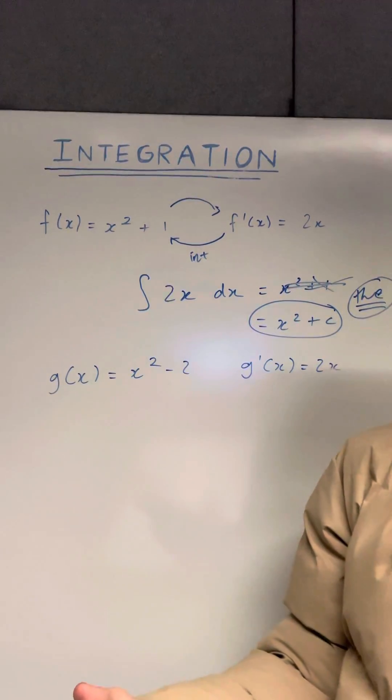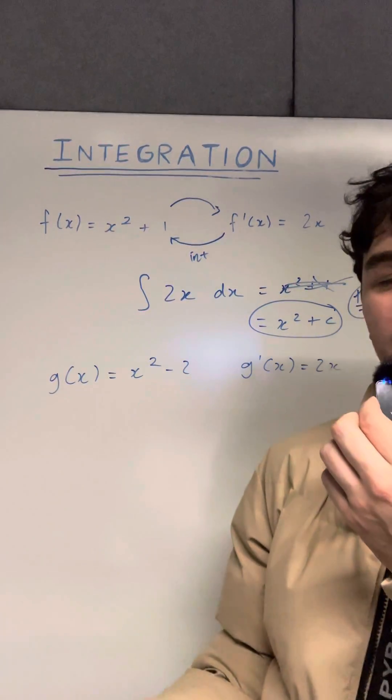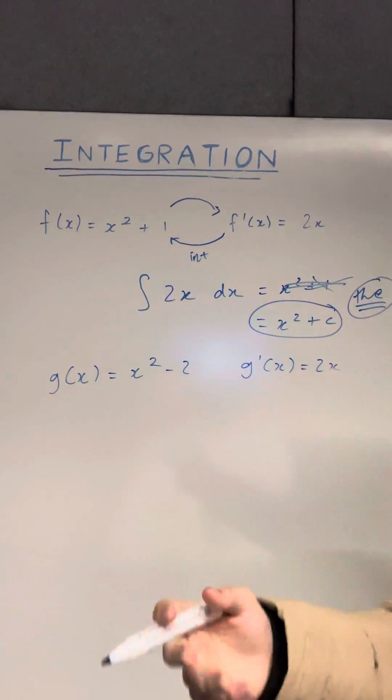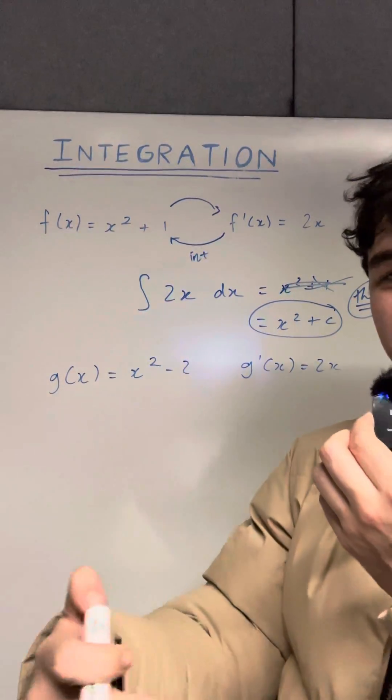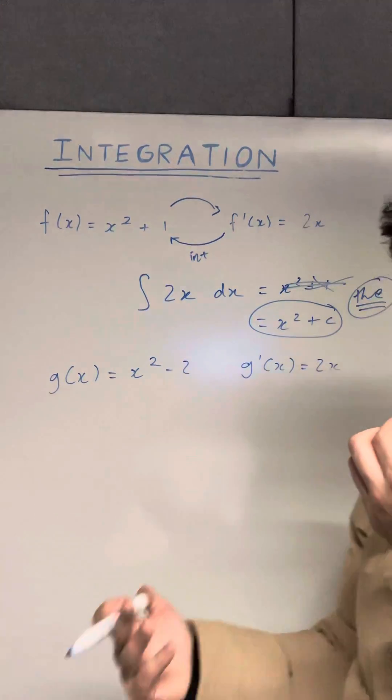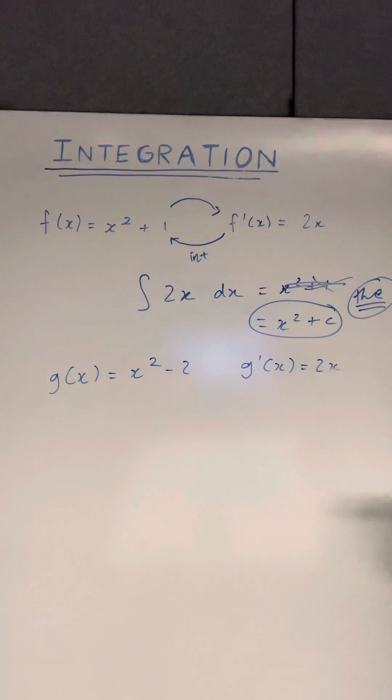But if you're asked for an antiderivative, it's kind of representing that you can just find any antiderivative. So you can substitute c for one, you can substitute in pi, you can substitute in 100, whatever constant you want to substitute into c, that's what you can do for an antiderivative.